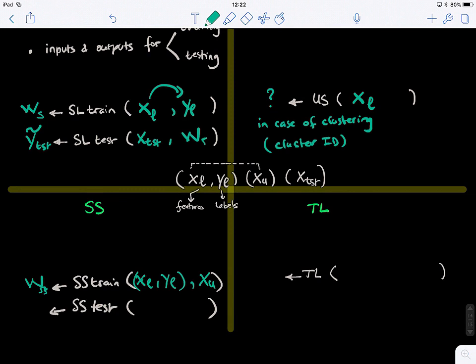So then in the testing stage, what do we give it? W and X_test. X_test, yes. And W semi-supervised. And what are we predicting? The labels. The labels, yes. For the test set. Very good. So the only difference is in the X_U.